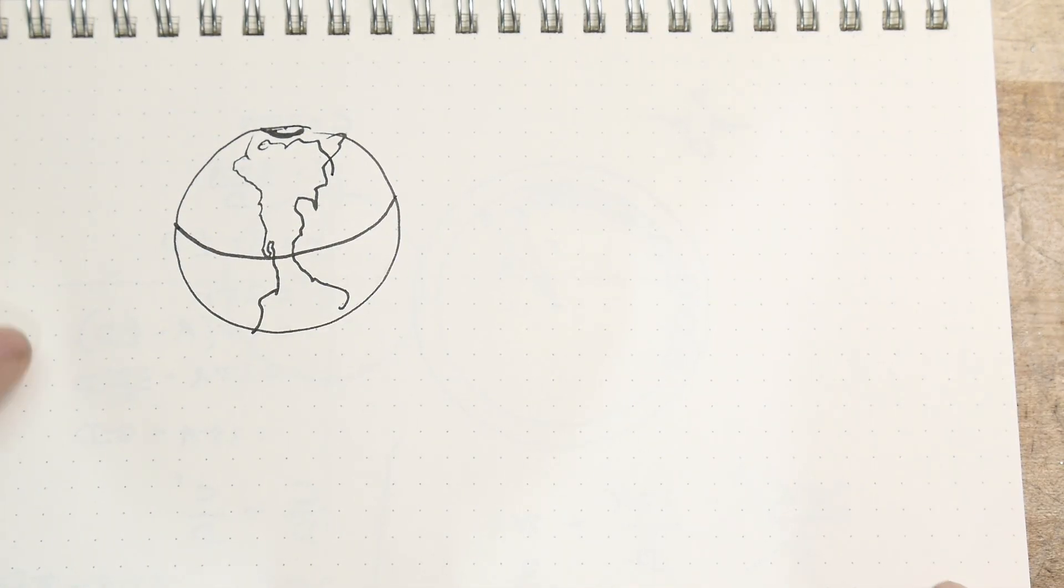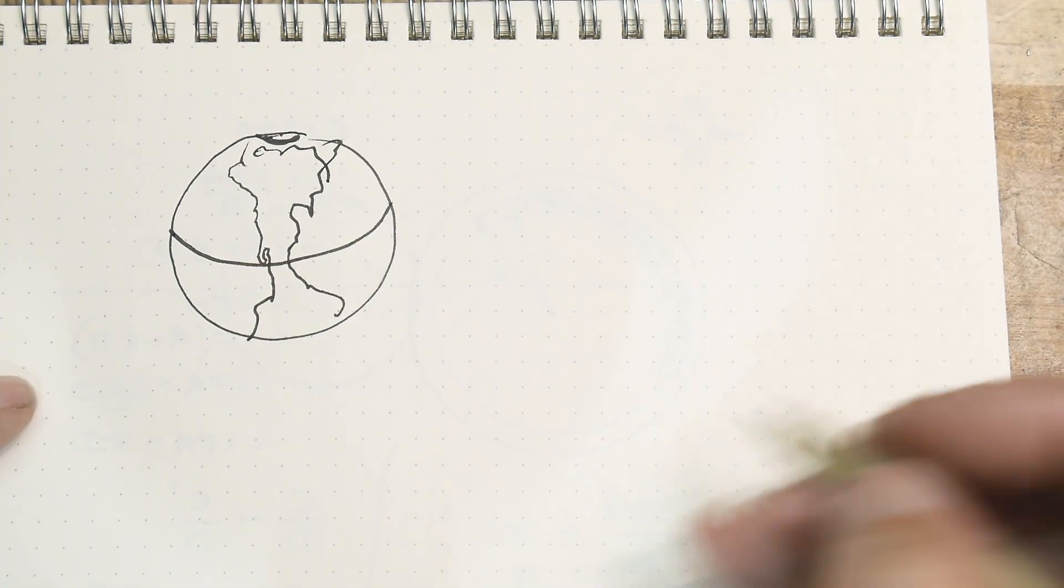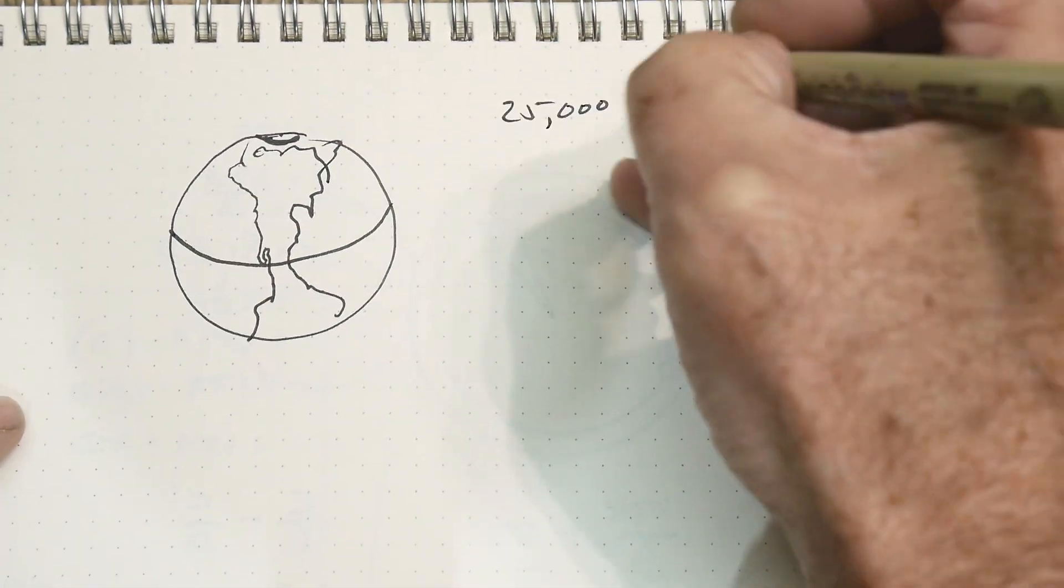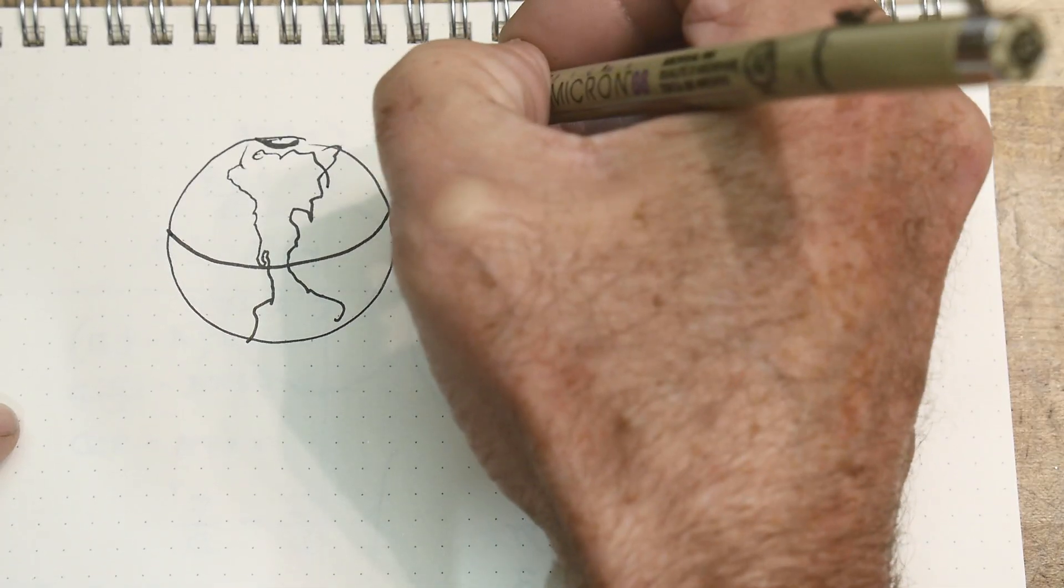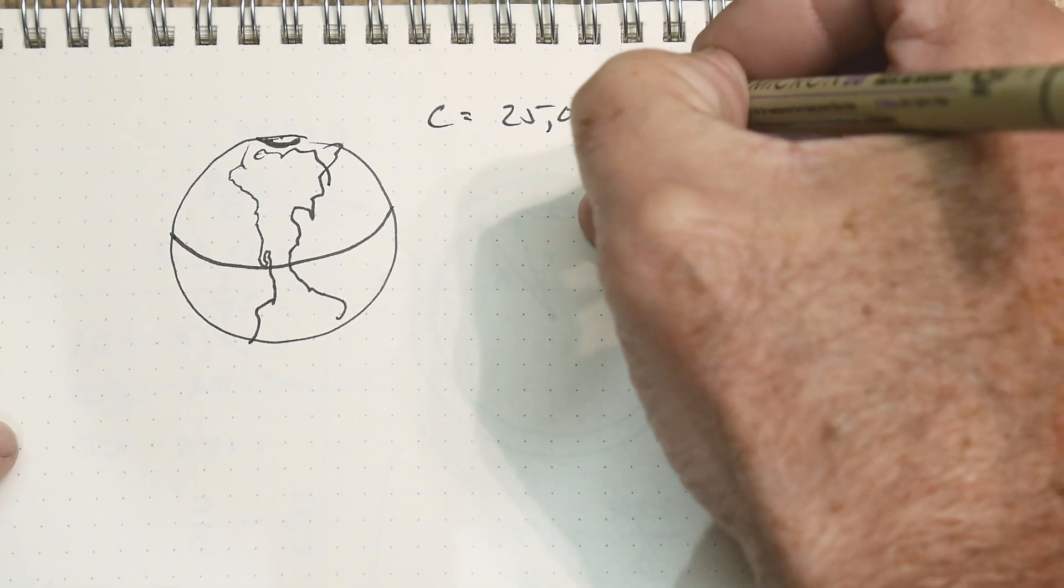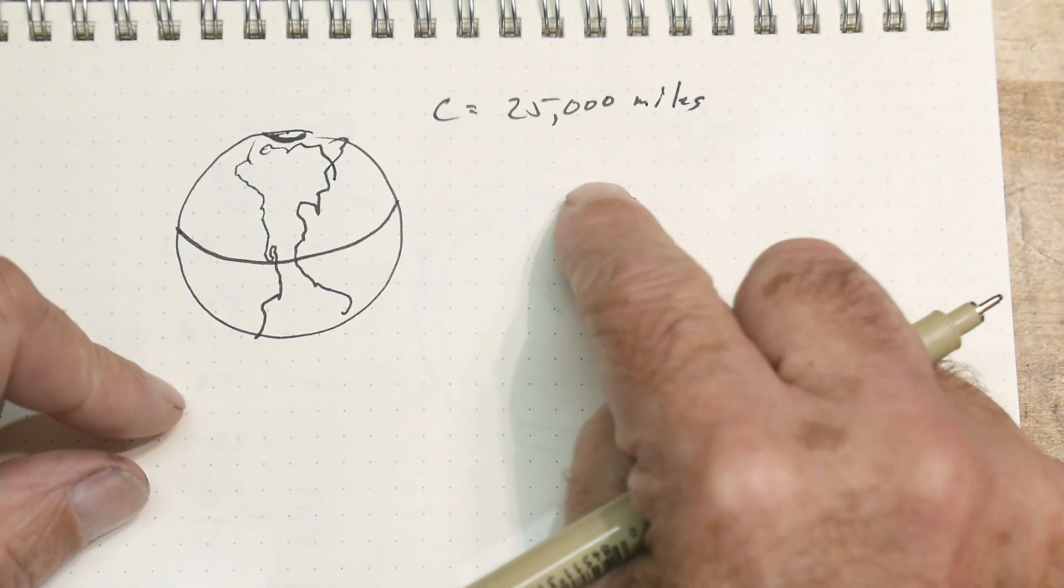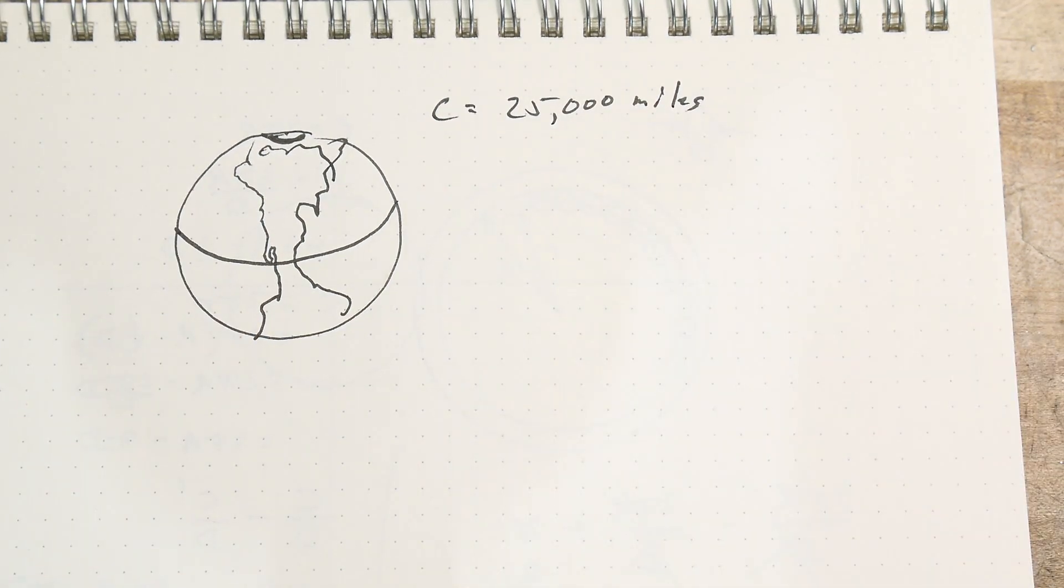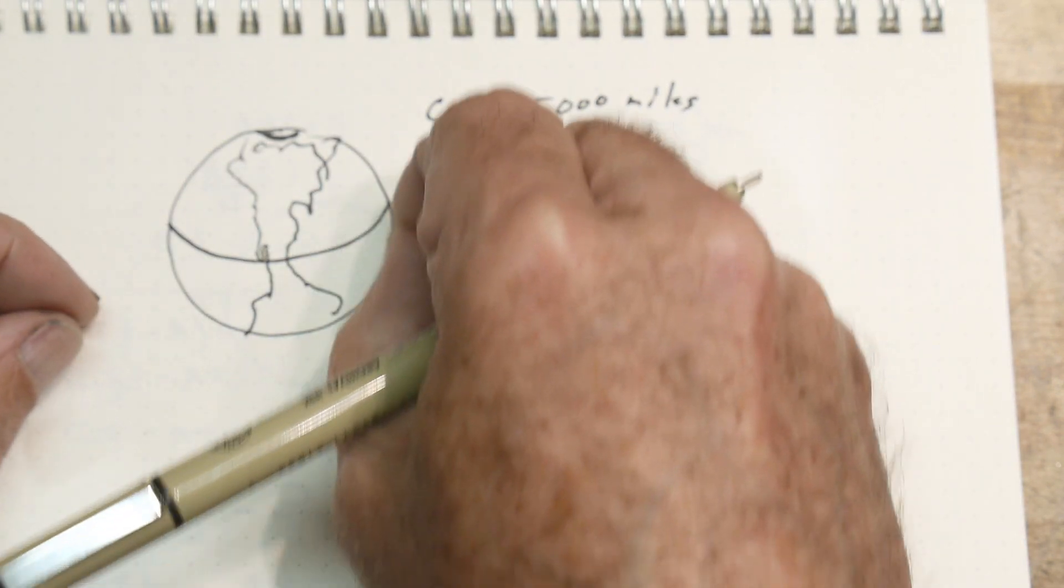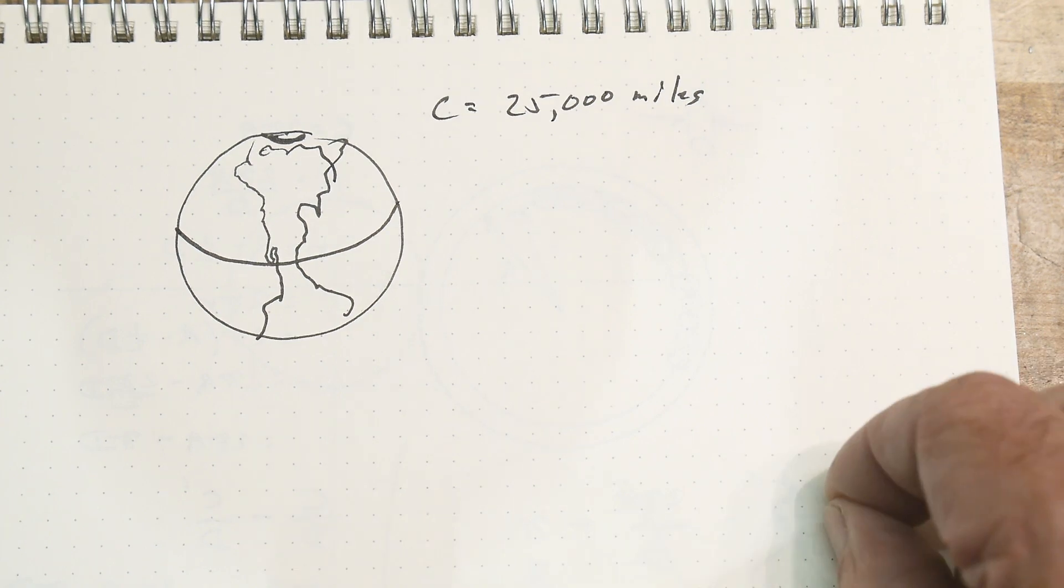Okay. So his question is, let's take some string and let's wrap it around the earth. Now the earth is about what? 25. I think it's 20. Its circumference or its equator is around 25,000 miles. I think that's right. Anyway, so you get a piece of string 25,000 miles long. And you wrap it around the equator real tight. Okay. So now you have the string wrapped around the equator and you can measure the circumference of the earth. All right.